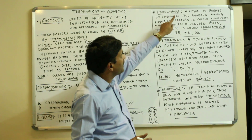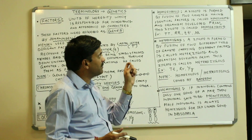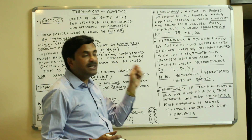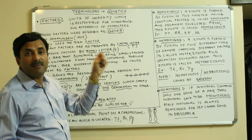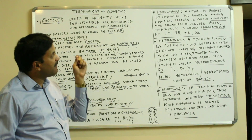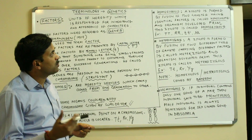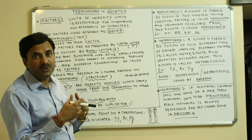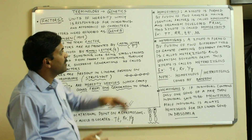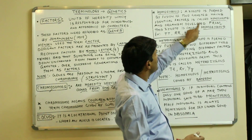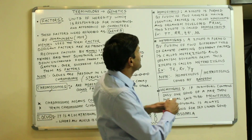A zygote formed by the fusion of two gametes having identical factors is called a homozygote. The organism developed from such a homozygote is said to be in a homozygous condition.